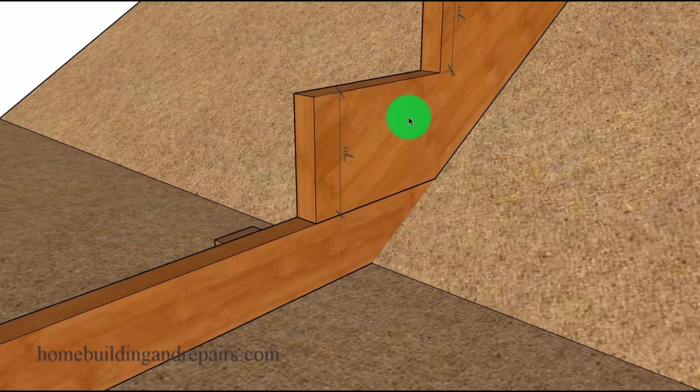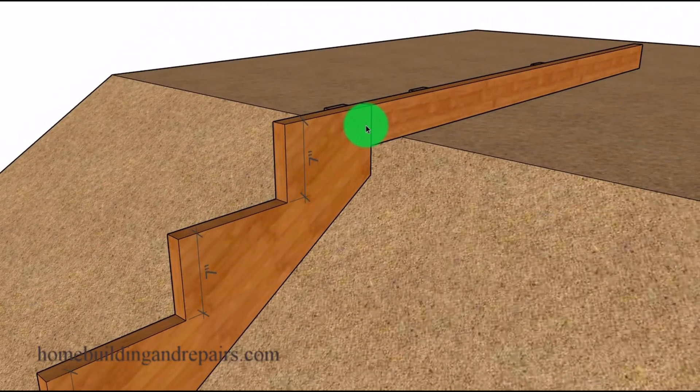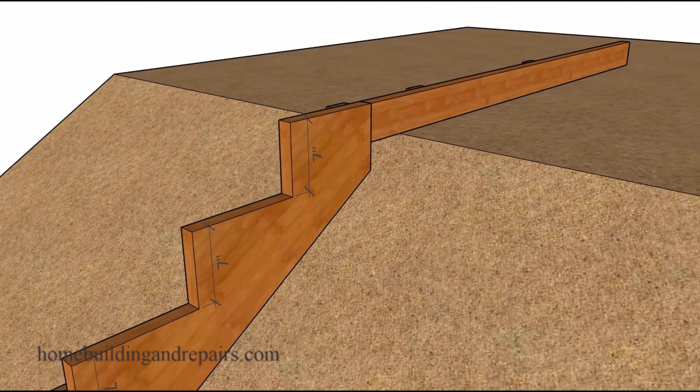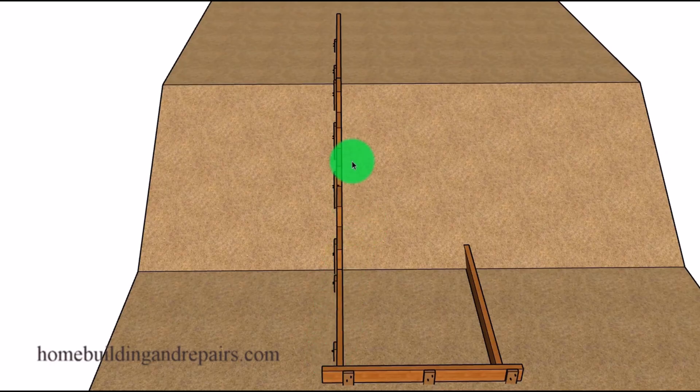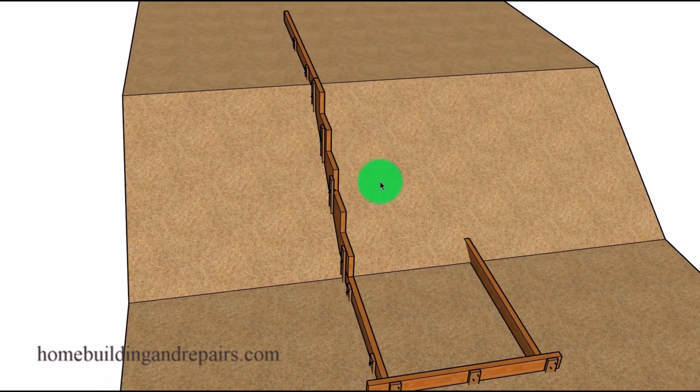And again, after you cut the stringer, you just simply set it on top of your form board. And then you can add stakes or braces on the other side, along with attaching it to the upper form board. And then you're going to want to make sure that it is nice and straight, of course.